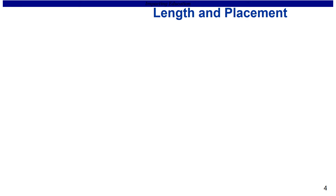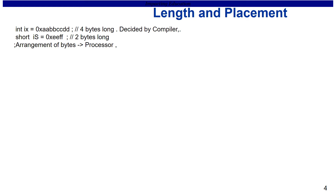We are going to look at an important property called length and placement for basic data types. Consider two variables: ix, which is an integer of 4 bytes, and is, which is a short. The length of integer is decided by the compiler — it looks at the processor architecture and decides the length. For ARM Cortex, the GCC compiler has decided the length of integer to be 4 bytes and short to be 2 bytes.